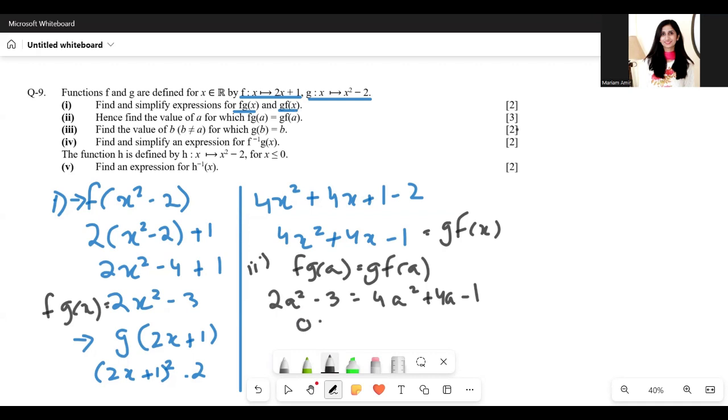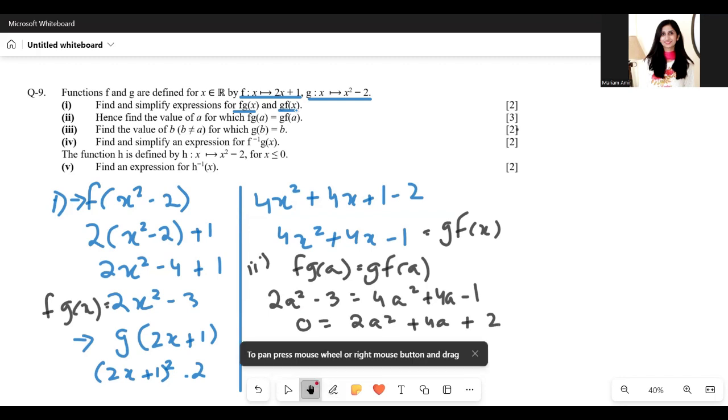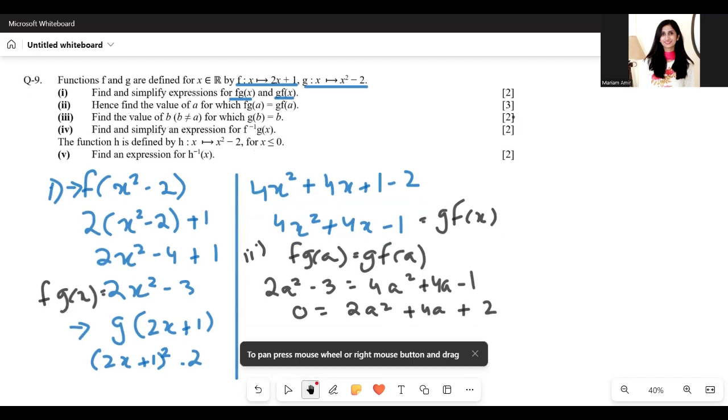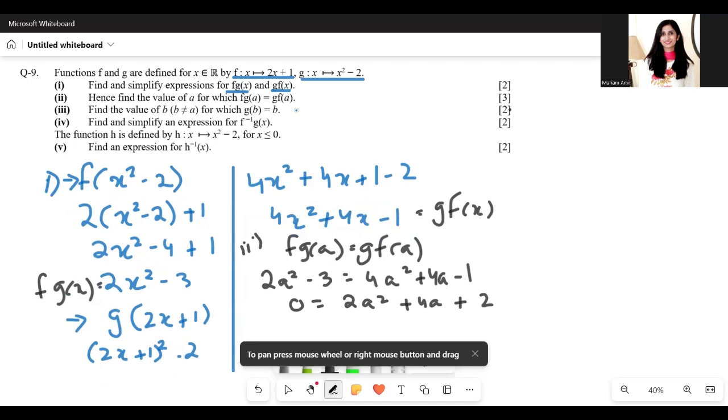Now simplify this quadratic equation: 2a squared plus 4a plus 2 equals 0. I'm going to take 2 common and divide it with the 0 on the other side. So a squared plus 2a plus 1.